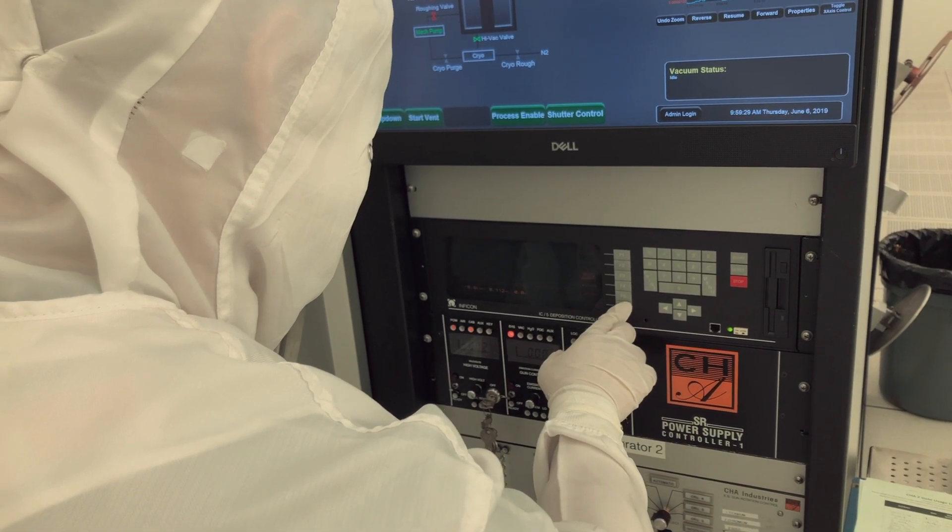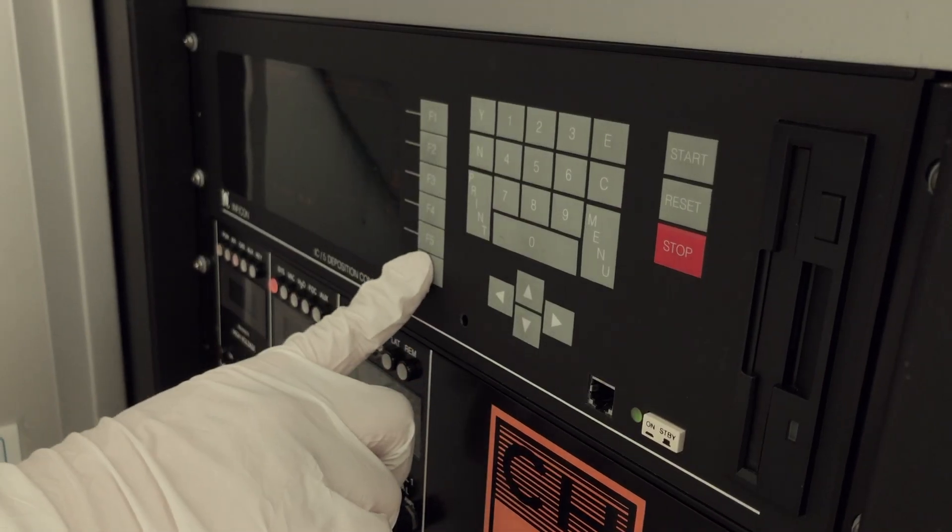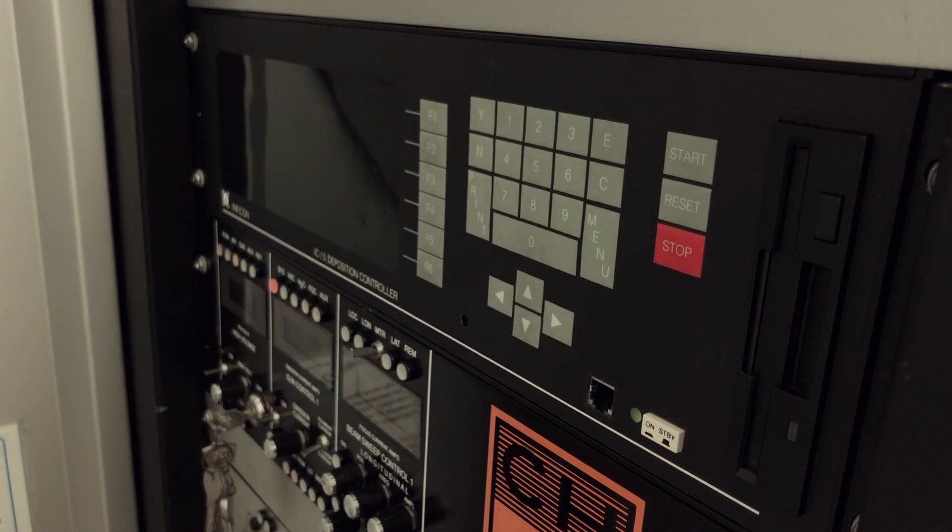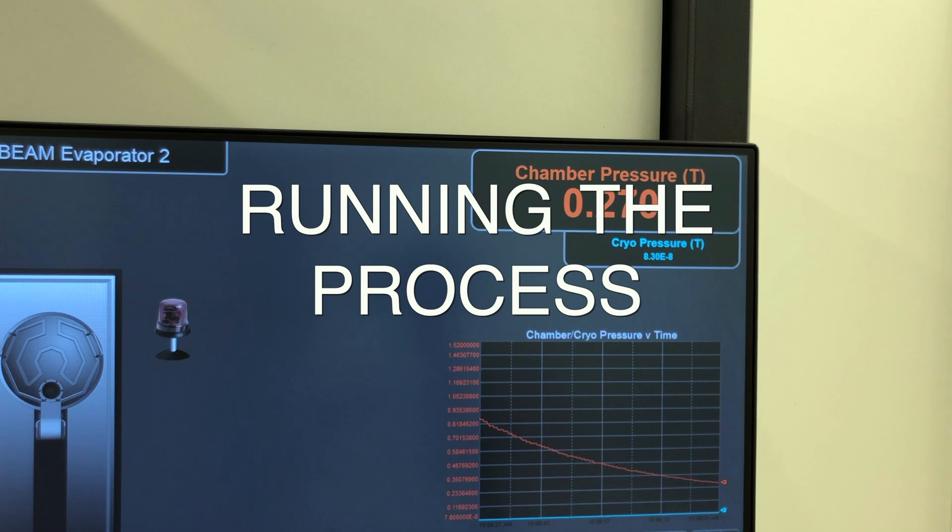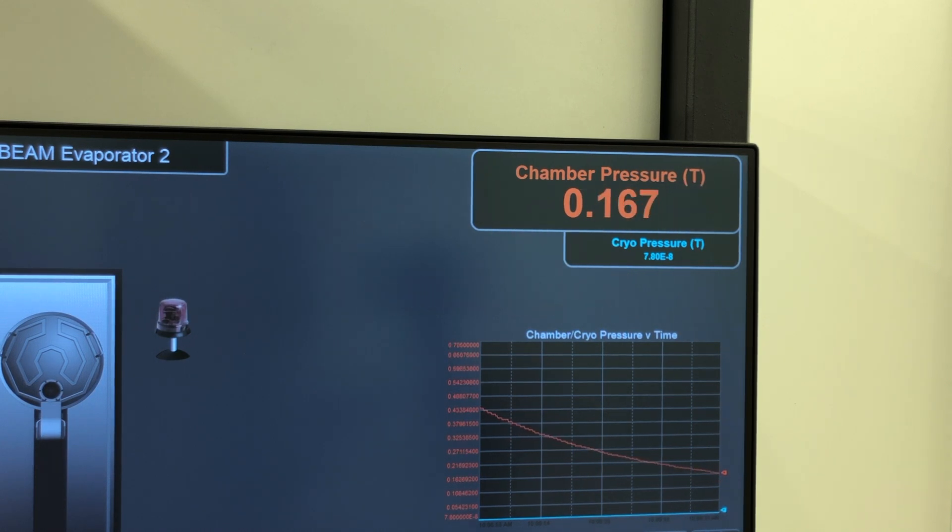Press F6 for program, then press F6 again for operate when you are ready to run your process. You should wait to start depositing material until the pressure is between 10 to the negative 7th to 10 to the negative 8th torr.